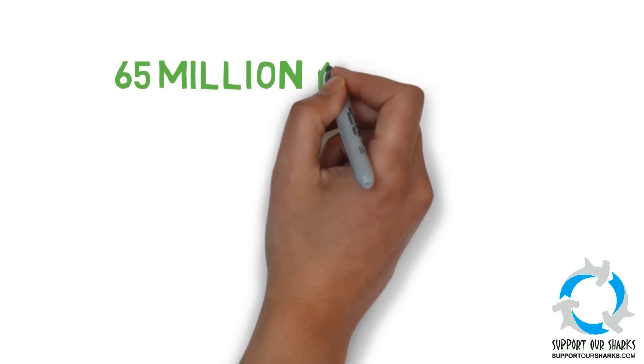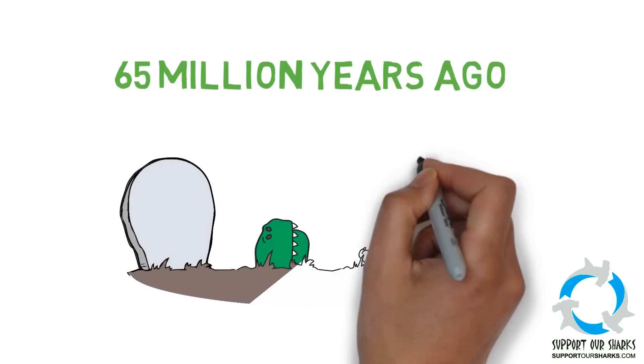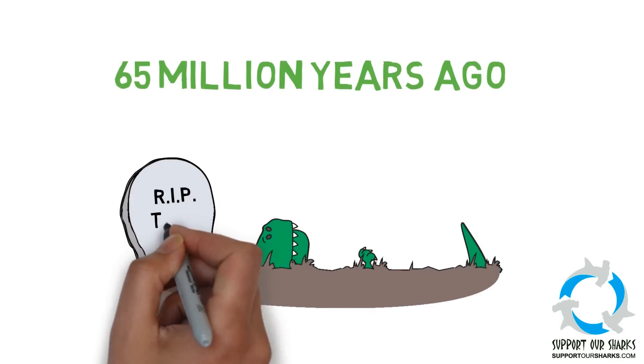At the end of the Cretaceous period, about 65 million years ago, another global catastrophe destroyed a mass number of species, including the dinosaurs.